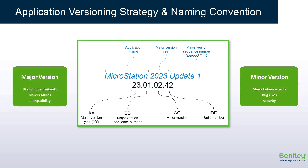As part of the new application versioning strategy, we are also modifying the naming convention of our applications. We are de-emphasizing the Connect Edition generation and moving to naming based on the calendar year of the release. For the example shown here, a new major version of MicroStation that will be released later this year will be called MicroStation 2023 instead of MicroStation Connect Edition Update 18.